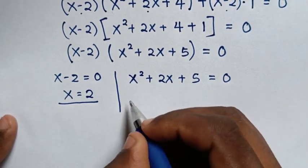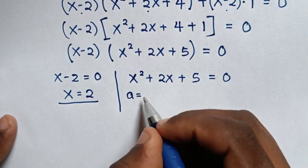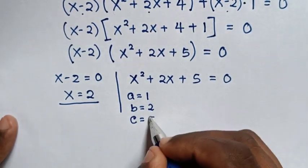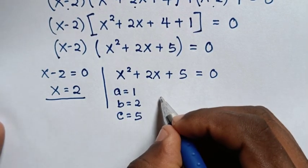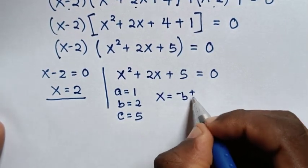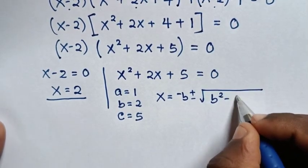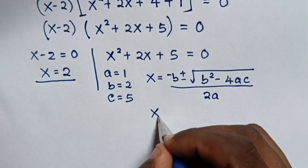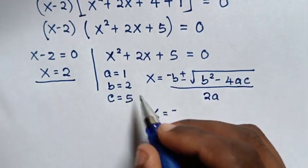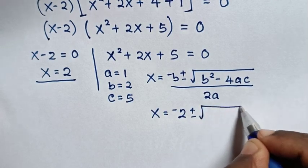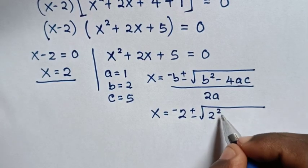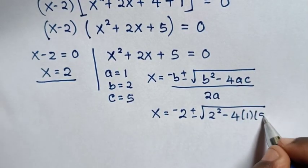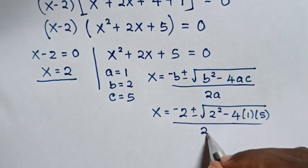Then from this quadratic equation, a is equal to the coefficient of x squared, which is 1; b is equal to the coefficient of x, which is 2; and c is equal to the constant, which is 5. We will apply the quadratic formula: x is equal to negative b plus or minus square root of b squared minus 4ac, over 2a. So x equals negative 2 plus or minus square root of 2 squared minus 4 times 1 times 5, over 2 times 1.